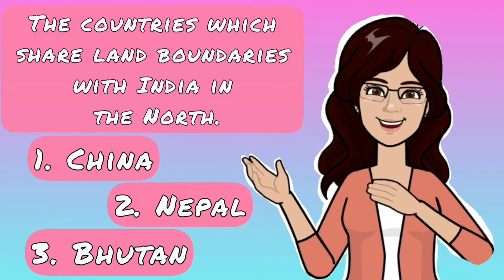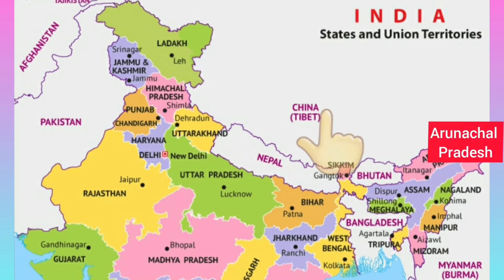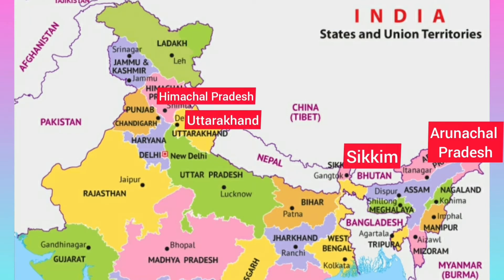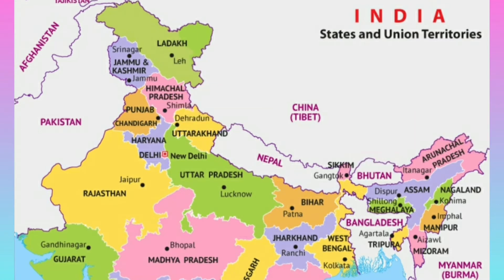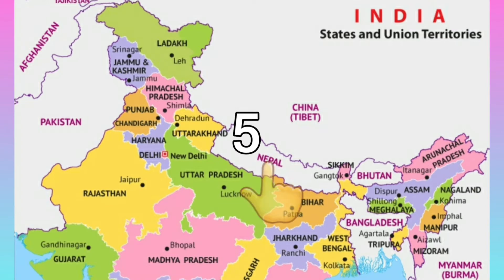China shares a land boundary with four Indian states and one UT: Arunachal Pradesh, Sikkim, Uttarakhand, Himachal Pradesh, and Ladakh. There are five Indian states which share land boundaries with Nepal.